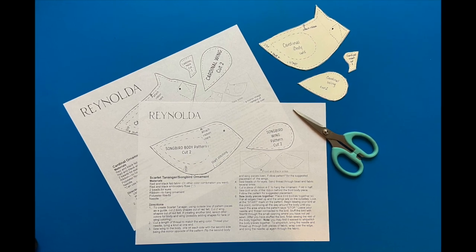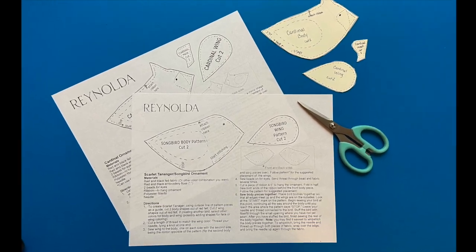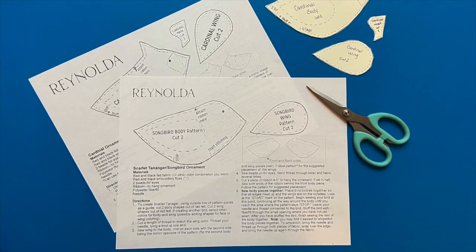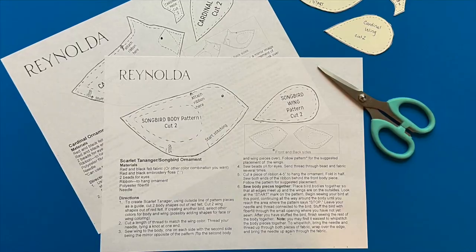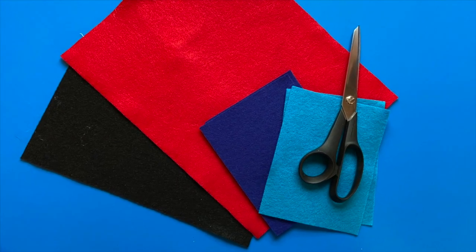For this project, you'll need a bird sewing pattern, which you can find with the links below, where there's either a songbird or a cardinal slash blue jay pattern. If you don't have a printer, try to draw your own based on the template. You'll need felt fabric and a pair of scissors.